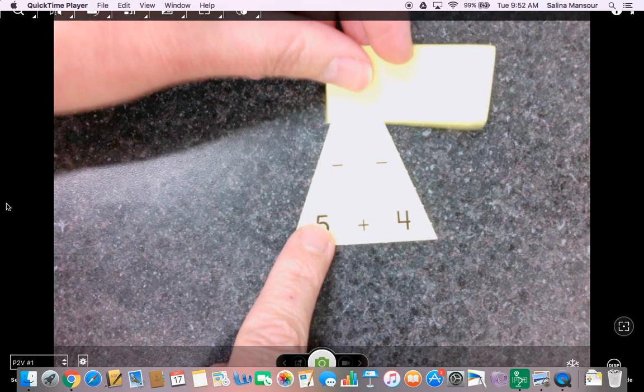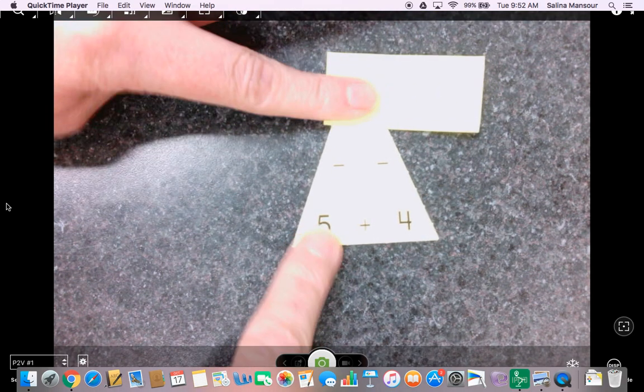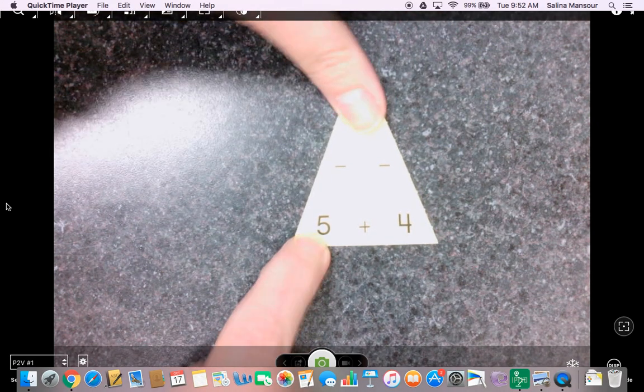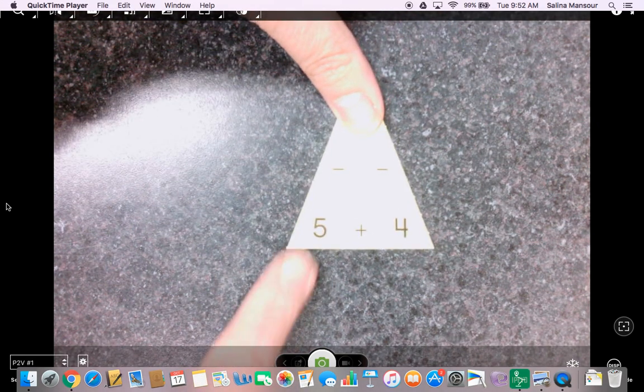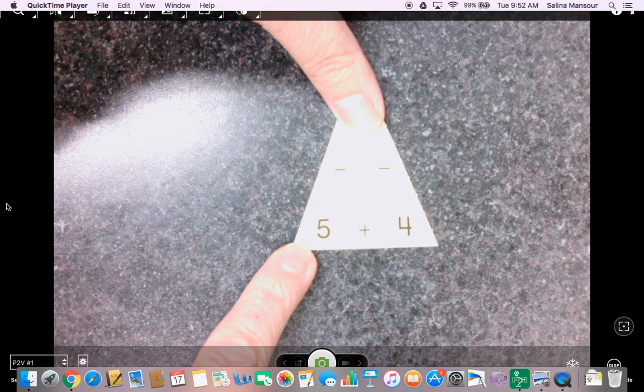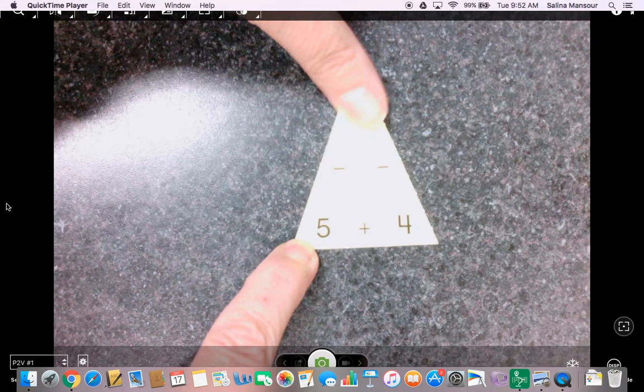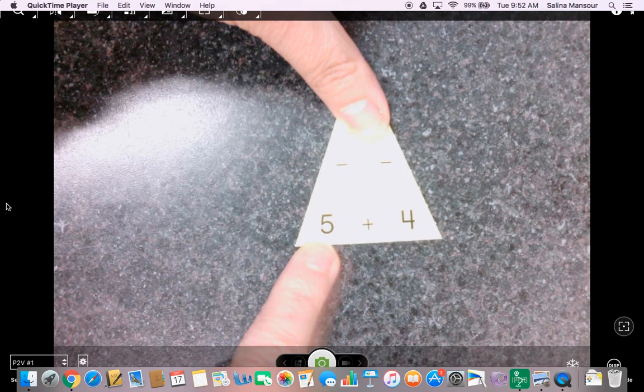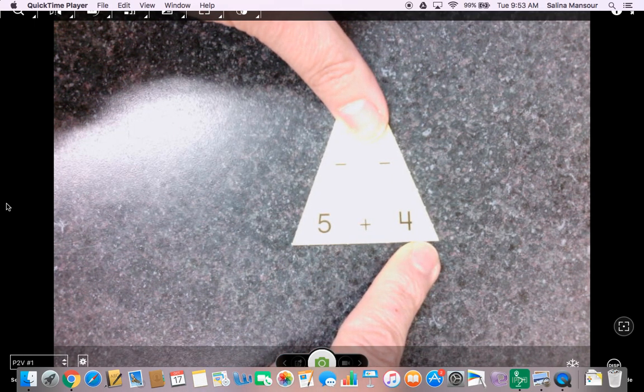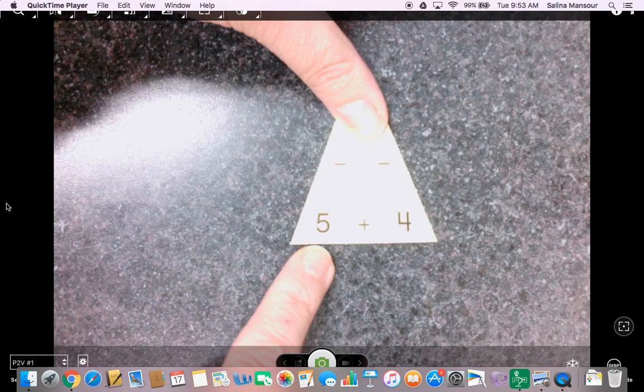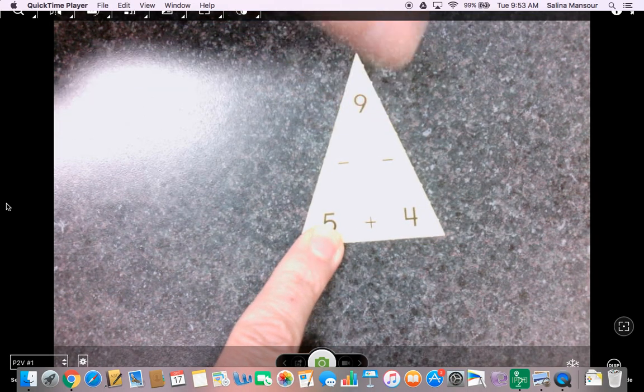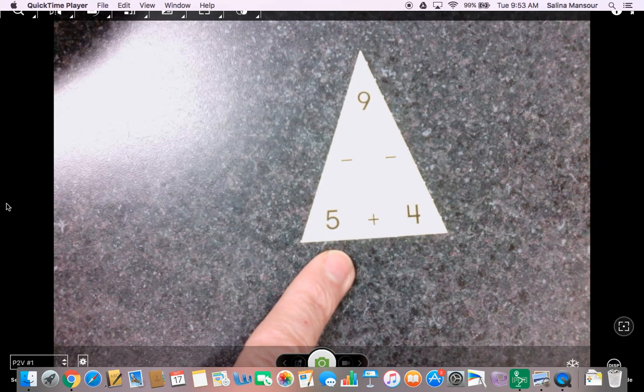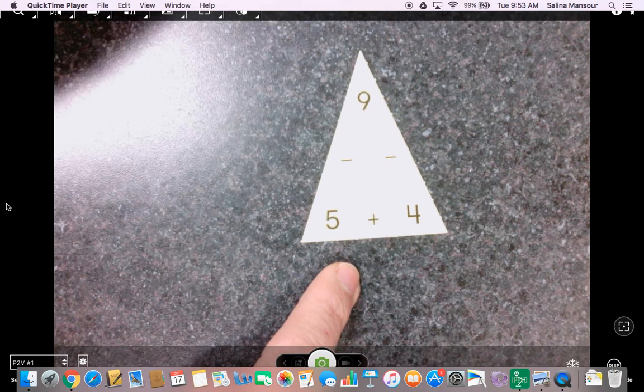So what we do here is we cover up. One way you can do this is you can use a sticky, a piece of paper, or even just your thumb or a finger to cover up the sum, or again, the total. And you can ask your child, what is 5 plus 4? And then I think to myself, 5 plus 4 is 9. I lift up and I see that yes, I am correct. We can also practice subtraction.